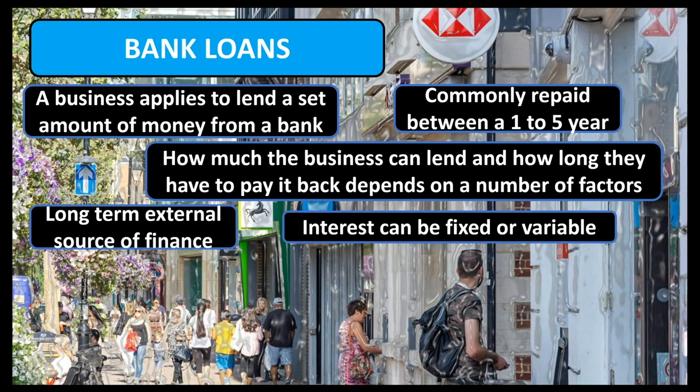Alternatively, the business may choose to have interest charged on a variable basis, meaning that the amount of interest charged on the amount borrowed will vary over time according to any changes in the market. When things are going economically well in terms of growth and inflation, interest rates are likely to increase to discourage spending and influence people to see savings as a more attractive option and borrowing as a more costly one. Whereas in economic downturns such as a recession, interest rates are often cut to encourage spending.